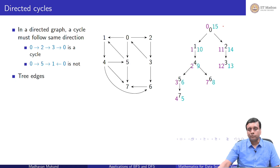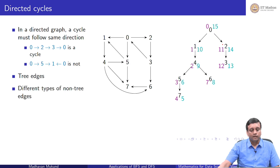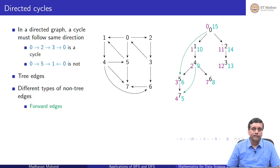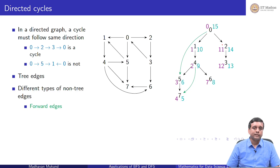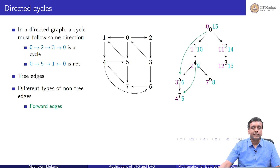In a directed DFS tree, the tree edges are those we followed during DFS — this is now a directed tree connecting all visited vertices. Non-tree edges come in different flavors. One type is a forward edge, which follows the direction of the tree — going from a higher node to a lower node, like a flyover skipping intersections. Examples are 0 to 3 and 4 to 7; they traverse the tree in the same direction as the edges they skip.